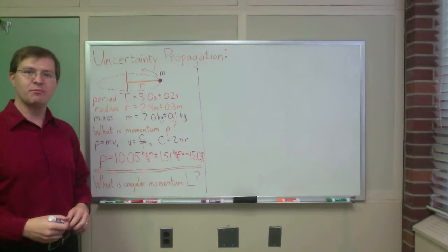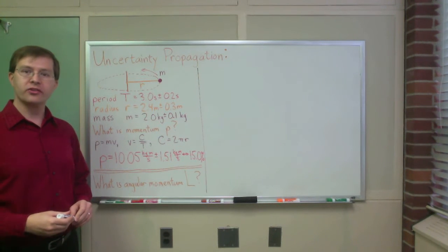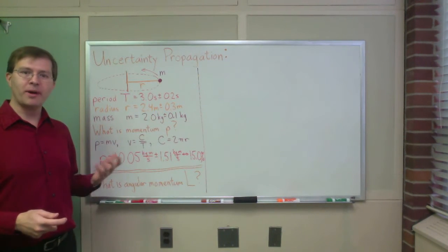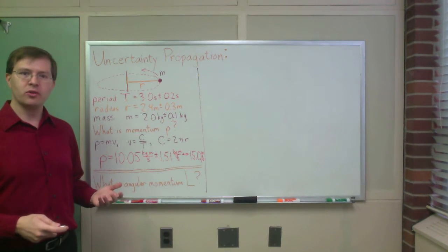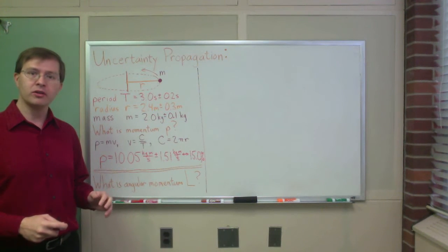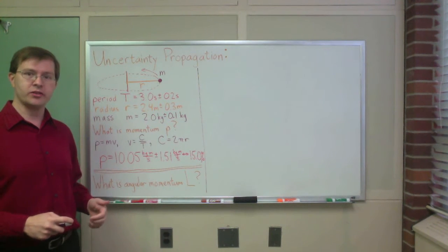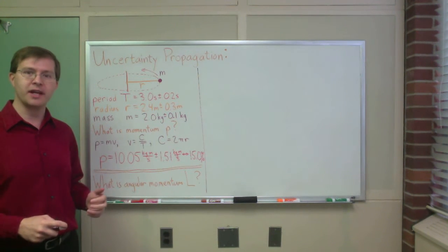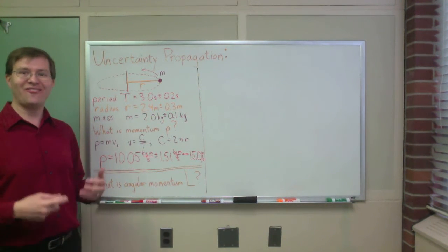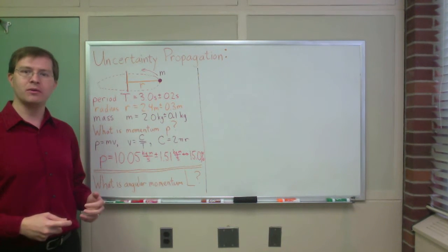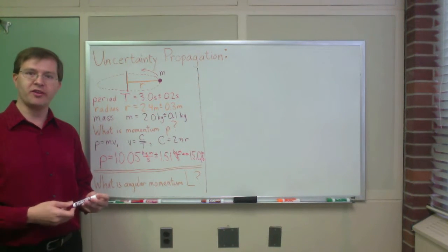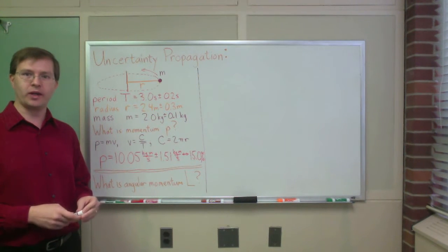As one last example of uncertainty propagation and error analysis, I'm going to follow up on my last example to illustrate a common pitfall you can run into in doing uncertainty propagation, and after that show you how to fix that problem by doing some more complicated equations using partial derivatives to make everything work out properly.